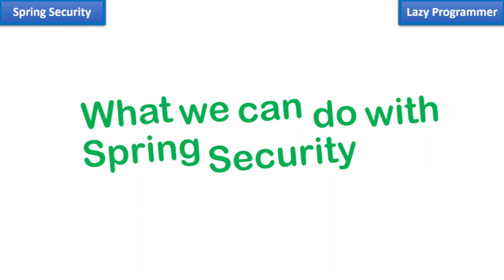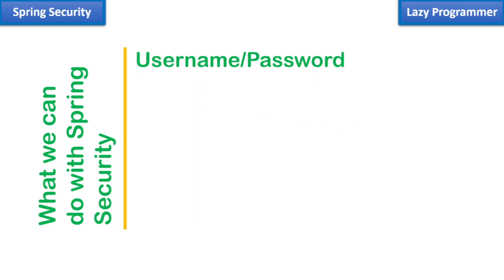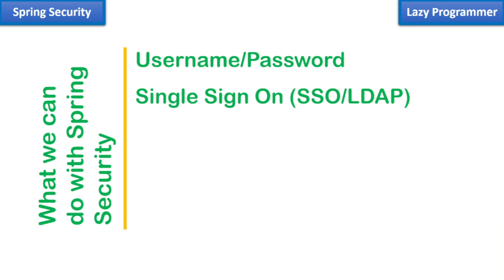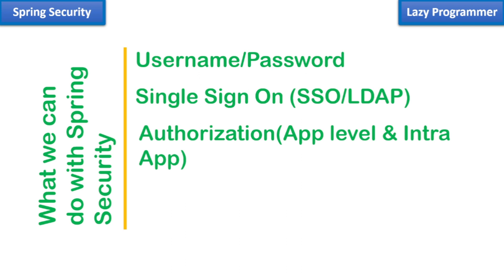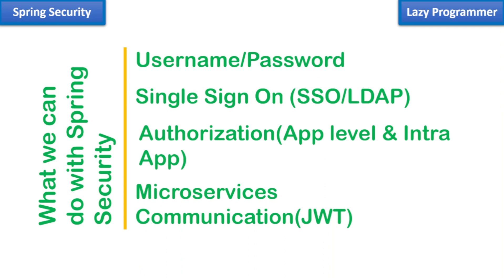With Spring Security in our application, we can have simple username and password authentication, single sign-on using SSO or LDAP type services, application-level authorization, and intra-app authorization such as OAuth. We can also implement security for microservice communications using tokens such as JWT. Not only at the URL level, but we can also secure method-level code, defining which user has access to execute a particular method.